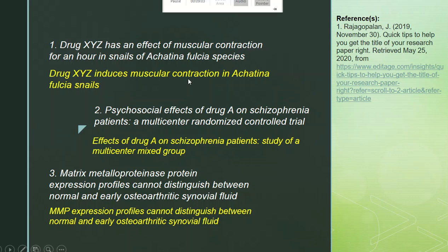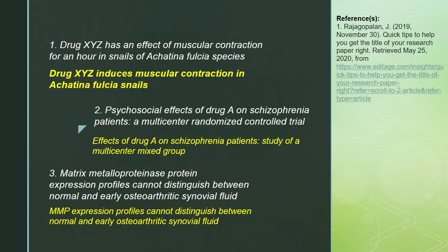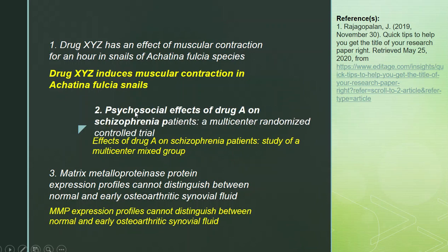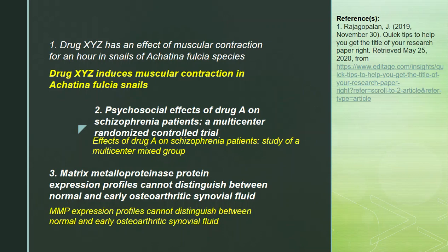Let's have some exercises. For number 1, given two titles, which is a smart title — the one in white text or the one in yellow text? For number 1, it is yellow. Both are smart; however, in an experimental research title, we do not include the time interval, and the white text states the word 'hour.' For number 2, the title in white text is smarter because it is more specific due to the words 'psychosocial effects.' For number 3, it is definitely the white text, because it is a big no-no for a title to be abbreviated — abbreviations should not be included in a title; all words must be spelled out.